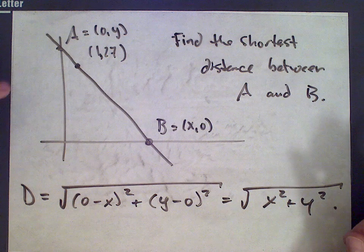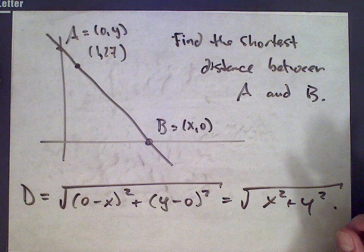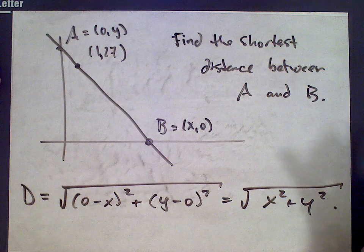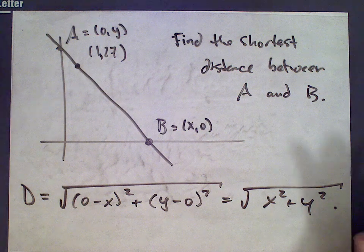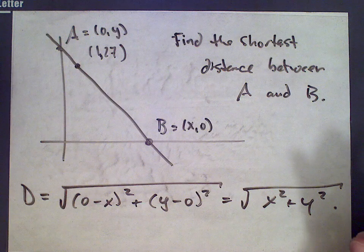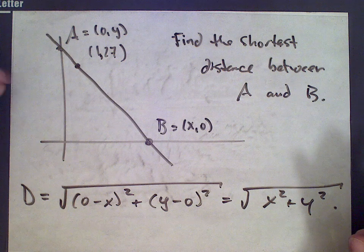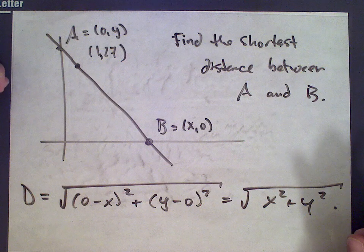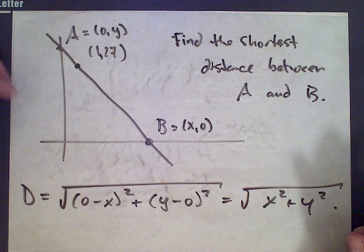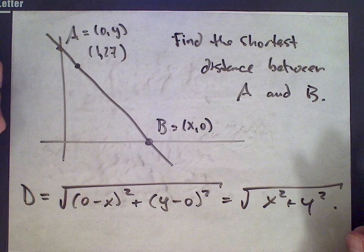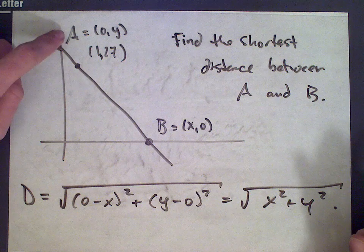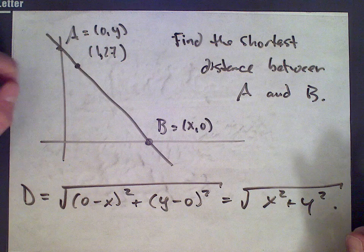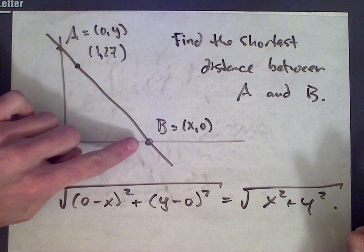This is a function of two variables. We want to deal with a function of one variable, so we need to relate x in terms of y or y in terms of x. We're going to use the fact that this line has to pass through the point (1, 27). We can get the slope in two different ways — using point A and (1, 27), or using (1, 27) and point B.